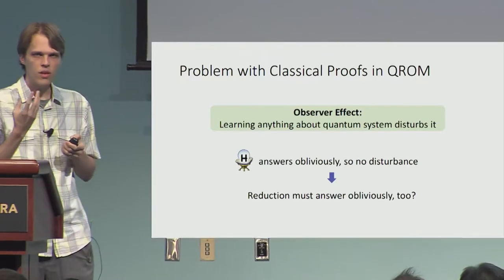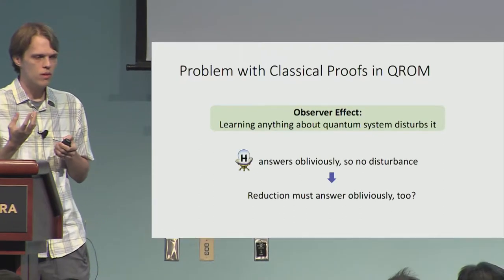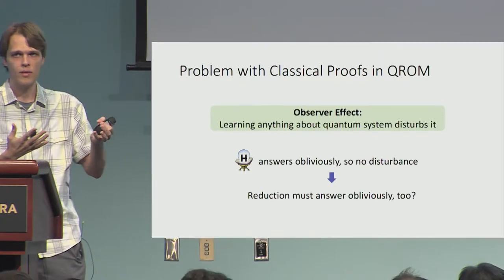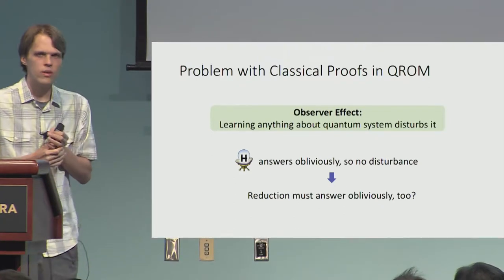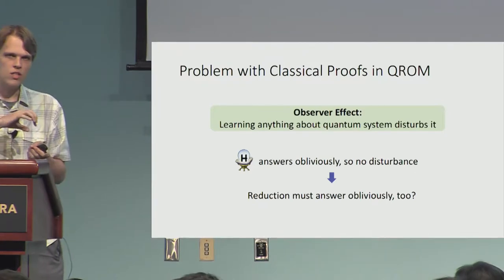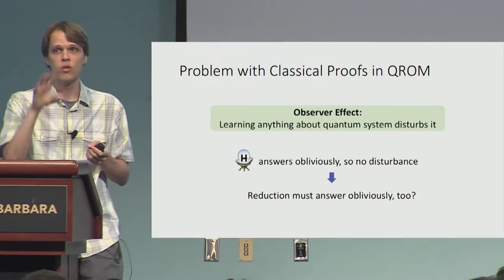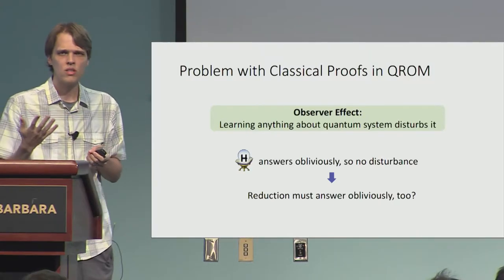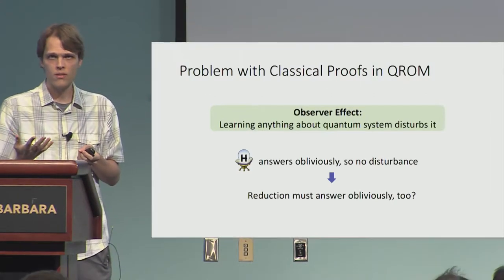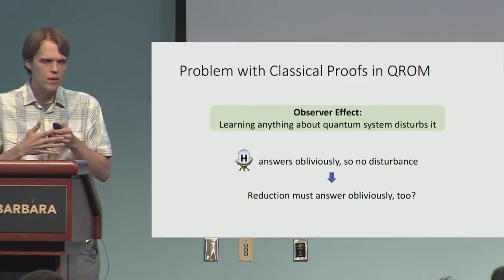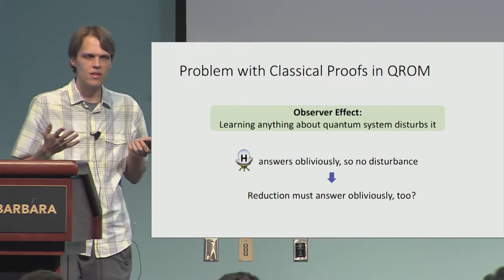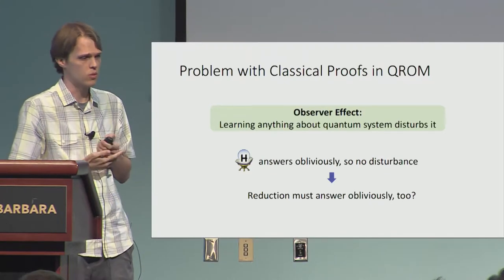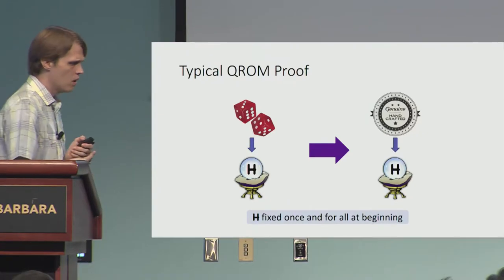The observer effect says that whenever you learn something about a quantum system, you necessarily risk disturbing that system. The random oracle is just answering queries obliviously — it isn't trying to learn anything about the adversary. So in our reduction, if the reduction is trying to learn anything about the adversary — such as what query points the adversary is interested in — it seems like the reduction is going to end up disturbing the adversary. The takeaway seems to be that the reduction actually has to answer obliviously too, or else it's easily distinguishable from the random oracle.